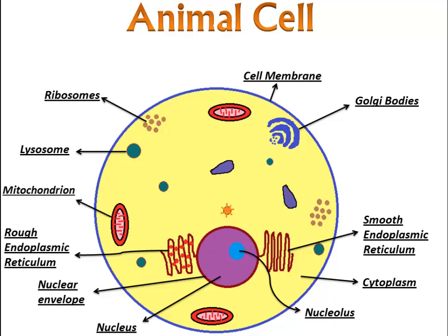Next is mitochondrion. Its singular form is mitochondrion but its plural form is mitochondria. Mitochondria are round tube-like organelles that are surrounded by a double membrane with the inner membrane being highly folded, as you can see in this diagram.